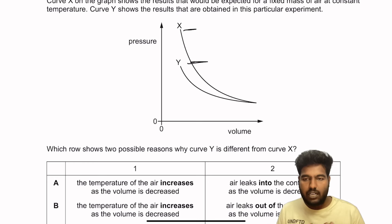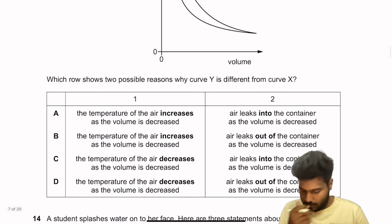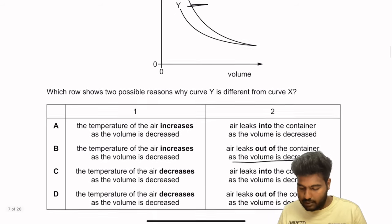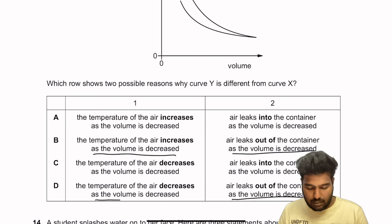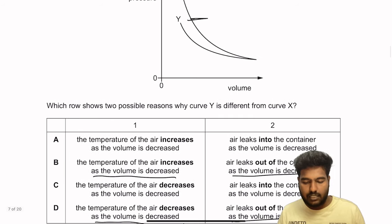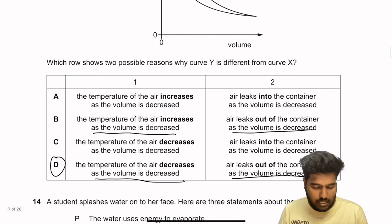The pressure being lower could mean air leaked out of the container as volume decreased. Regarding temperature: temperature is directly proportional to pressure. If pressure is decreasing, temperature must be decreasing as volume is decreased. So air leaking out is one reason, and temperature of the air decreasing as volume is decreased is the other. Option D is the right answer.